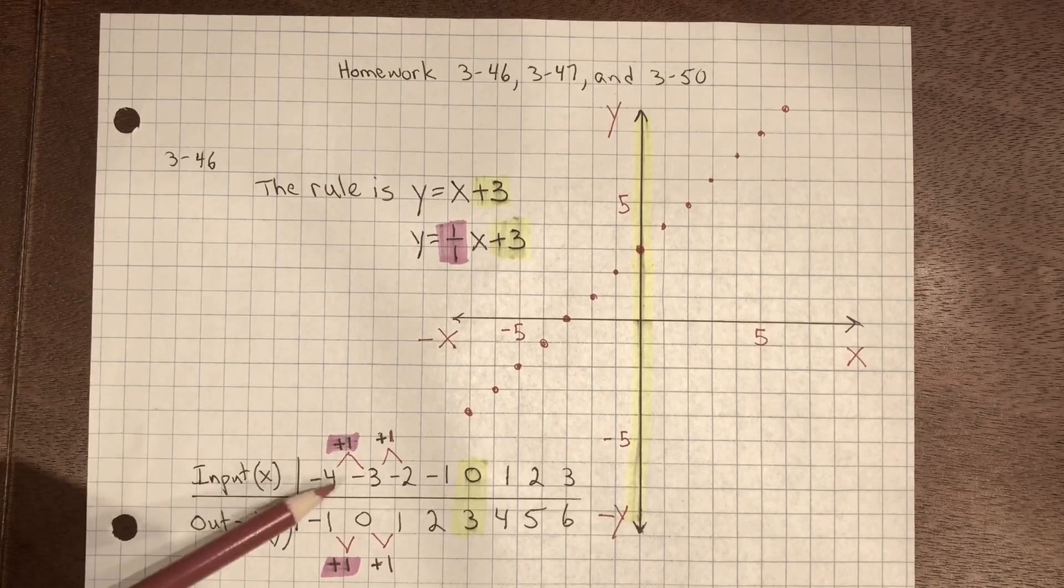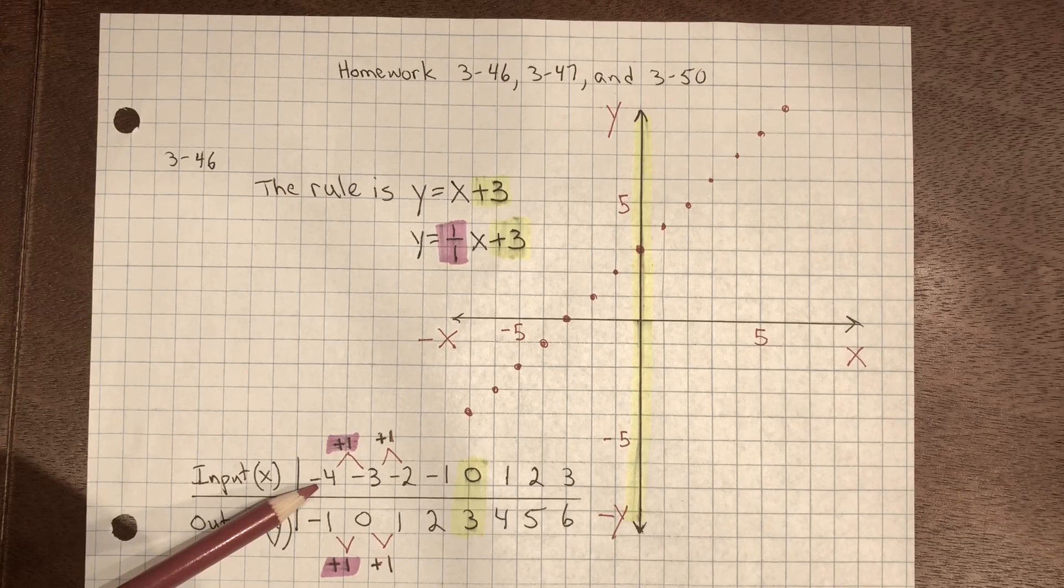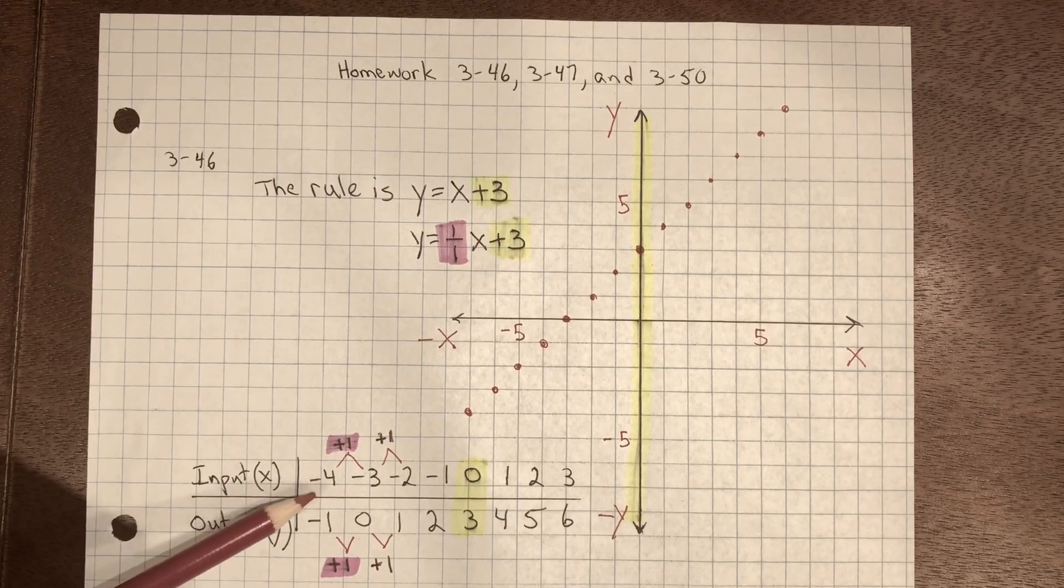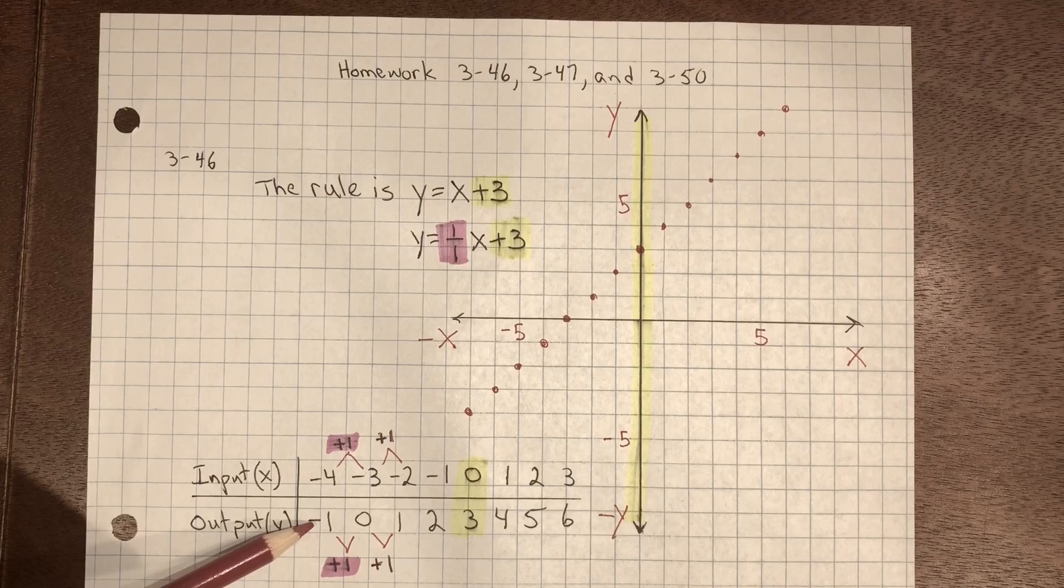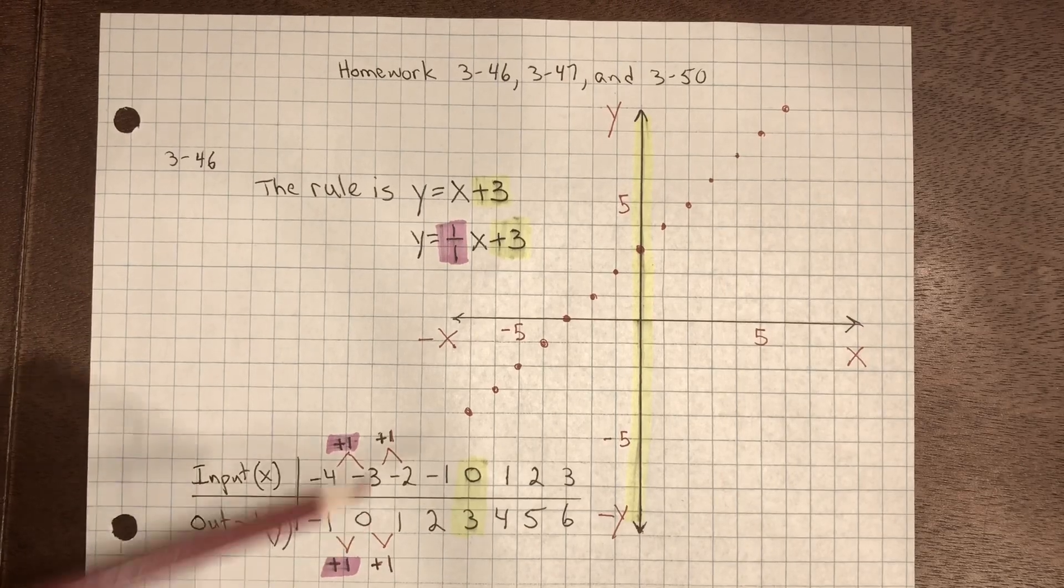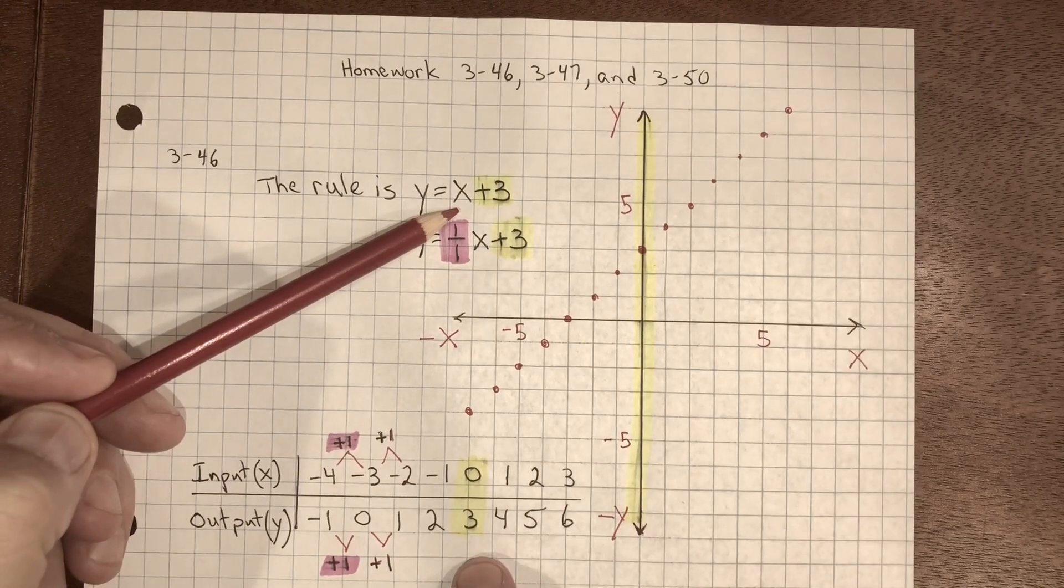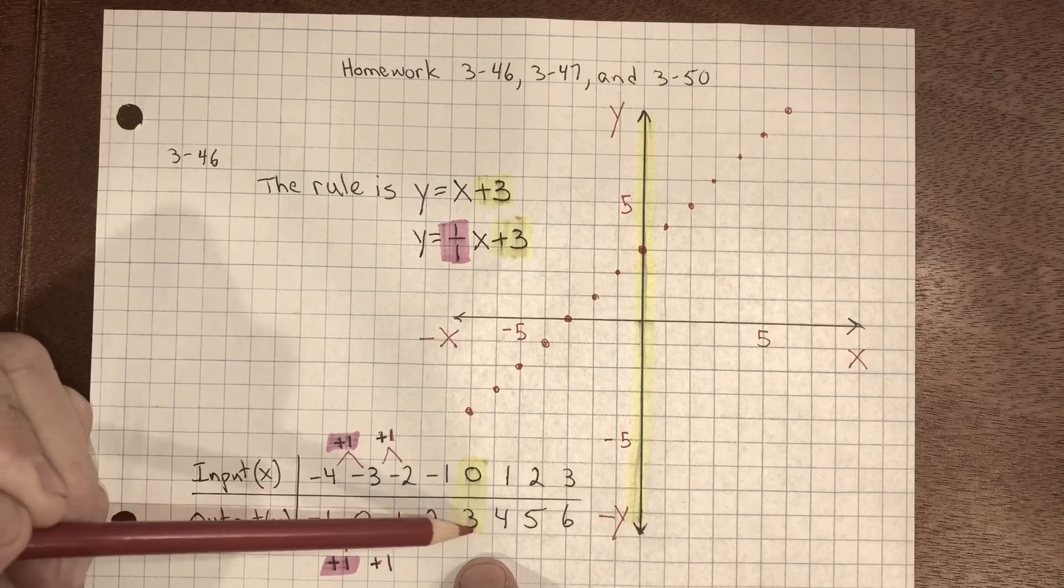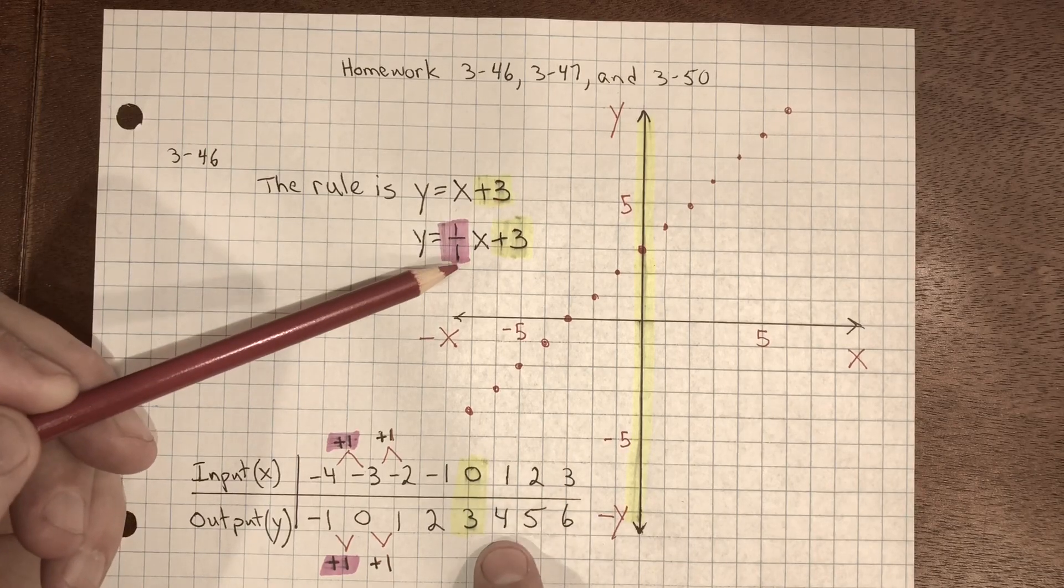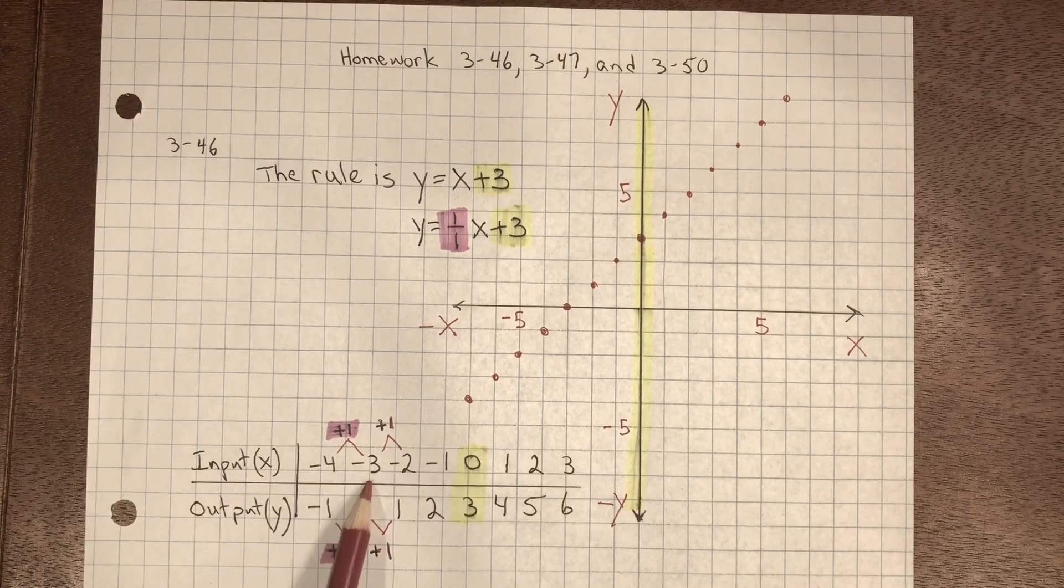If we look at the table, we can see that each value, we have x and we add three to it. x which is negative four plus three is negative one. Negative three plus three is zero. Zero plus three is three. One for the x plus three equals four.